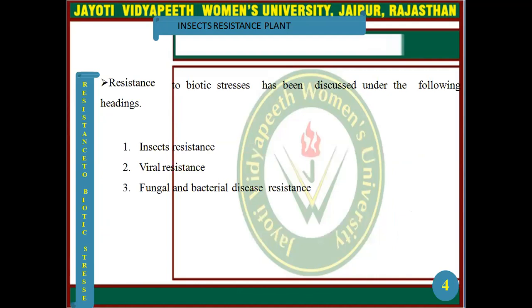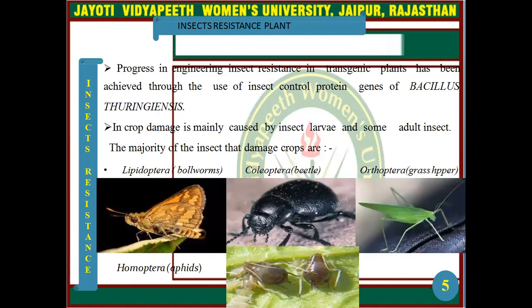Resistance to biotic stress has been discussed under the following headings: insect resistance, viral resistance, and fungal and bacterial disease resistance. Progress in engineering insect resistance in transgenic plants has been achieved through the use of insect control protein genes of Bacillus thuringiensis. Crop damage is mainly caused by insect larvae and some adult insects.